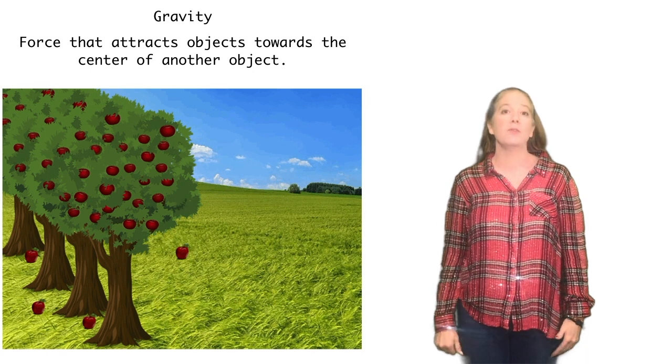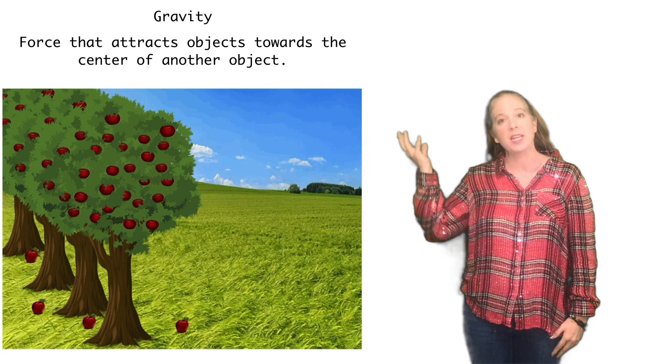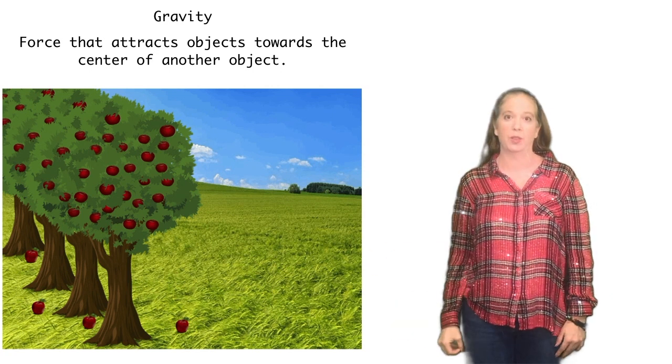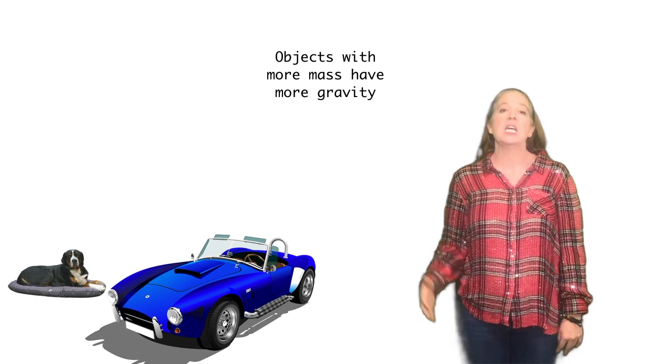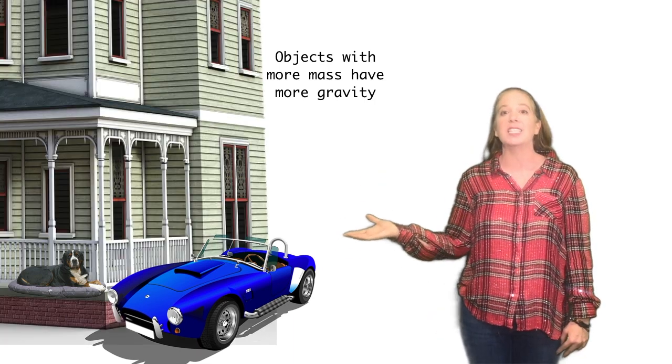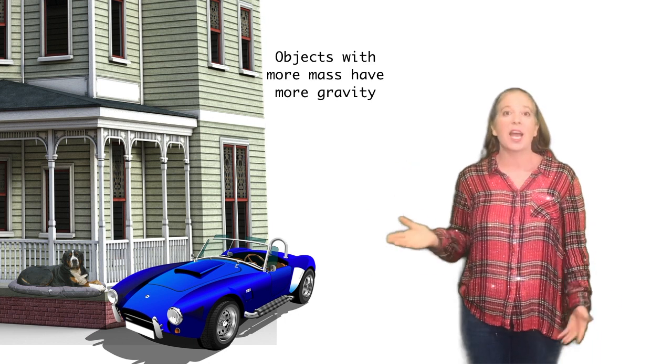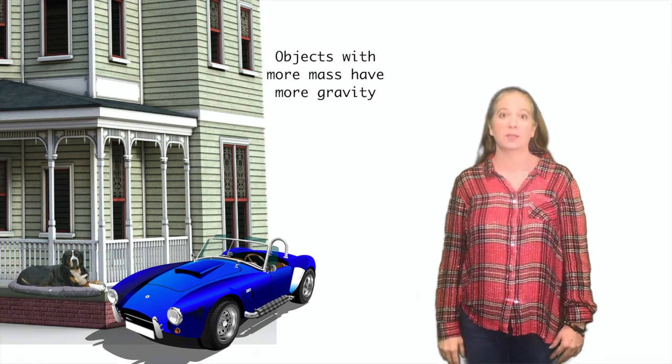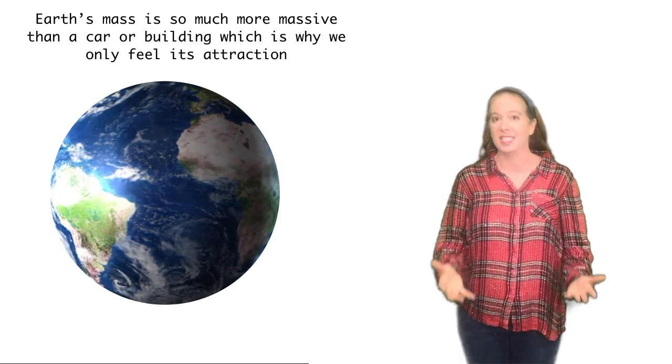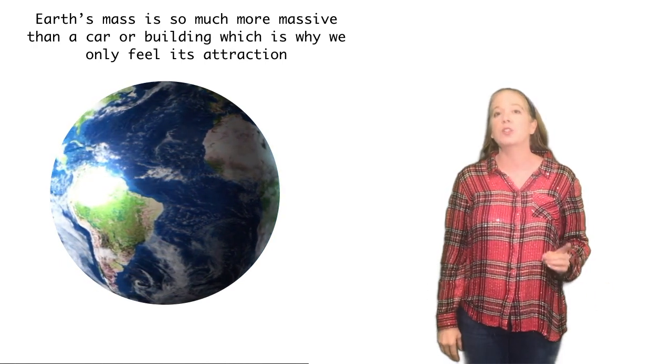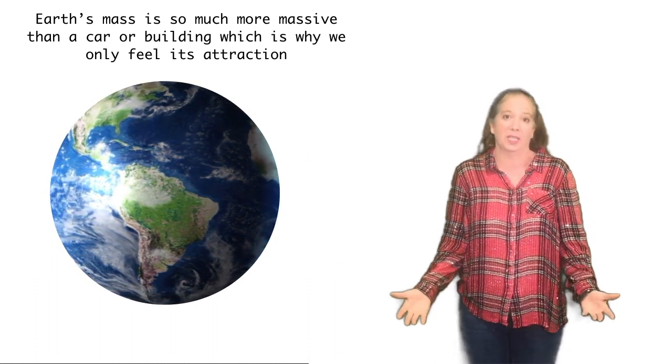Gravity is the force of attraction. This apple here on the tree is being attracted to Earth. The more massive an object is, the more gravity it has. So that means that this car is actually having more gravity than this dog, and the house has more gravity than the car. And although every object with mass does have gravity, Earth's mass is so much greater that we only feel its attraction.